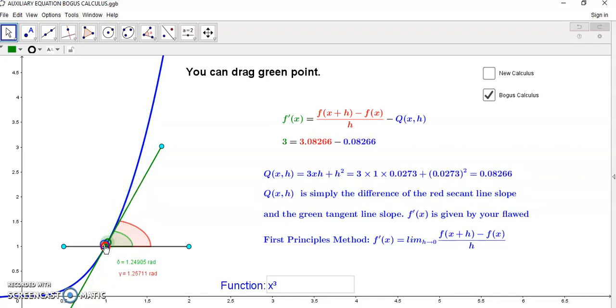Your mainstream calculus is really broken beyond repair because this has to be zero in order to arrive at the derivative. Now, this equation here is true because Q(x,h) is an expression, and this is the expression of Q(x,h).